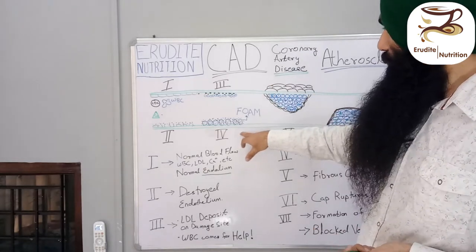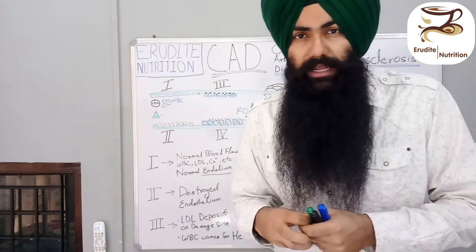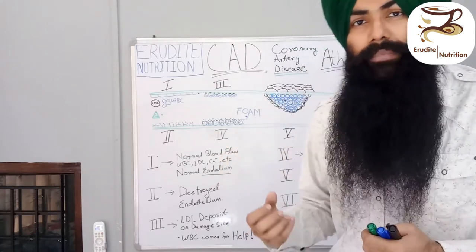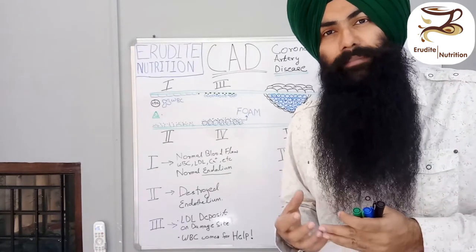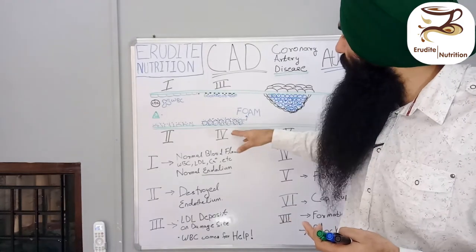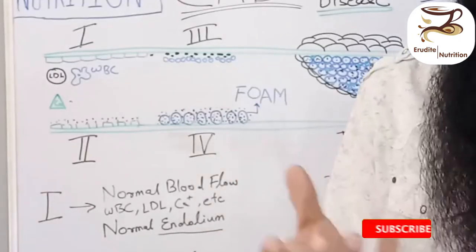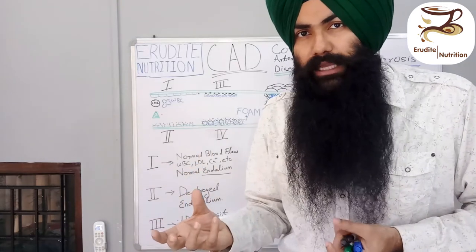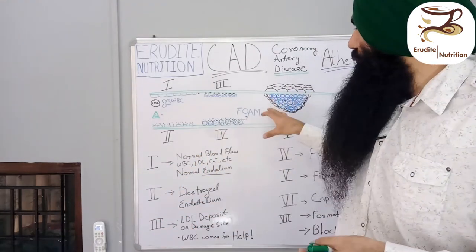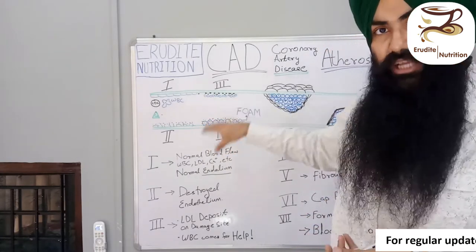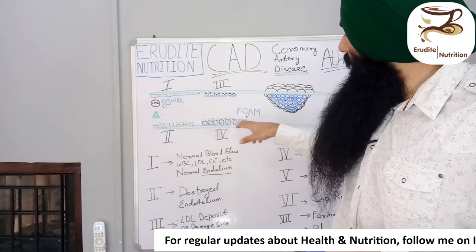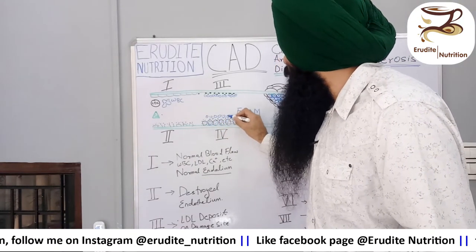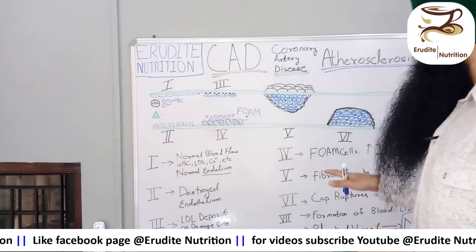In step four, as WBCs engulf LDL particles along with cholesterol, they accumulate a higher concentration of lipids inside them. When these cells have enough lipids inside, they eventually die at the site of damage, converting into fluffy, fat-filled, lipid-filled foam cells. There are now a lot of foam cells dying and sticking at the damage site, and even more LDL and WBCs continue to arrive.